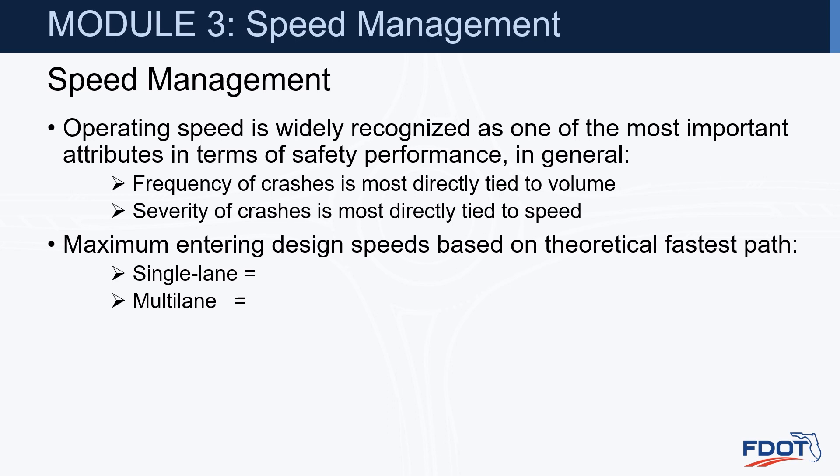The maximum entering design speed is based on the theoretical fastest path. For single lane roundabouts, we want to have this theoretical fastest path less than 25 miles per hour. And for multi-lane roundabouts, we want to have it less than 30 miles per hour.